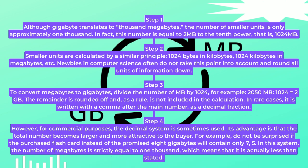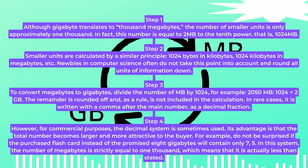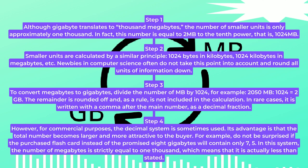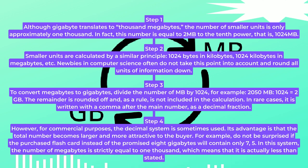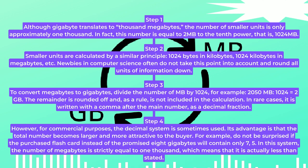Step 3. To convert megabytes to gigabytes, divide the number of MB by 1024. For example, 2050 megabytes divided by 1024 is equal to 2 GB. The remainder is rounded off and, as a rule, is not included in the calculation. In rare cases, it is written with a comma after the main number as a decimal fraction.